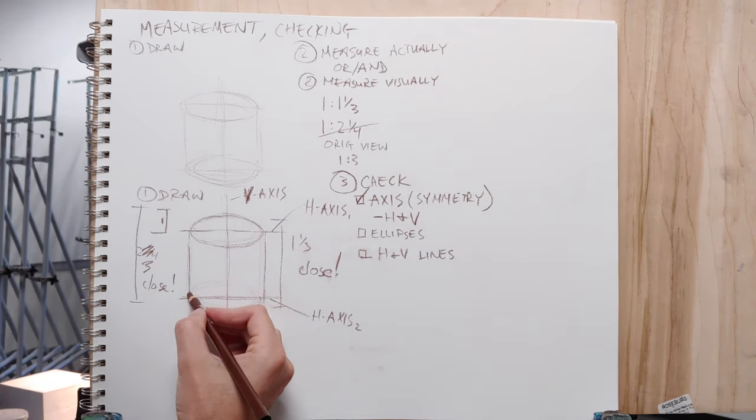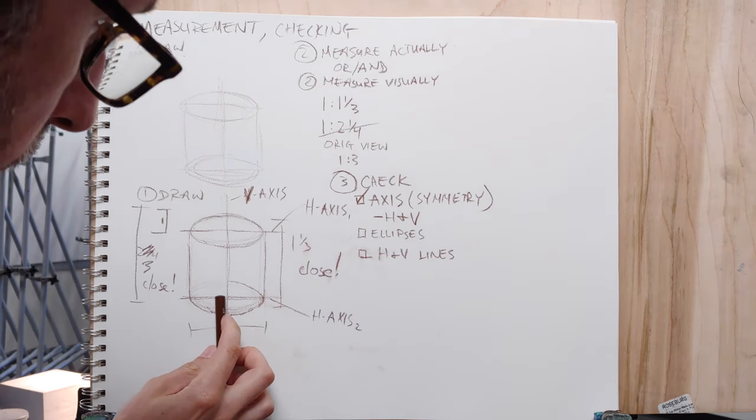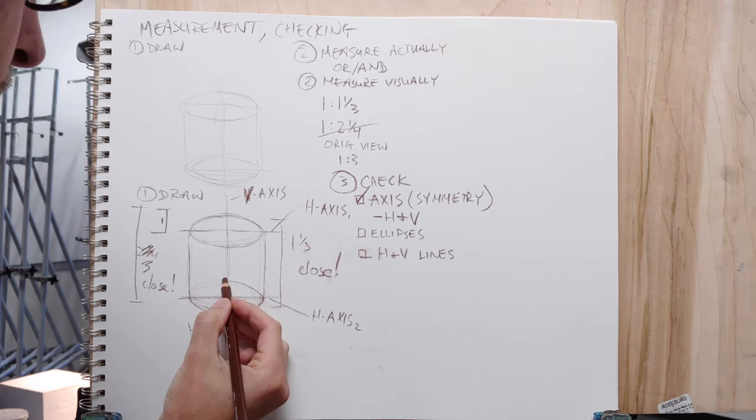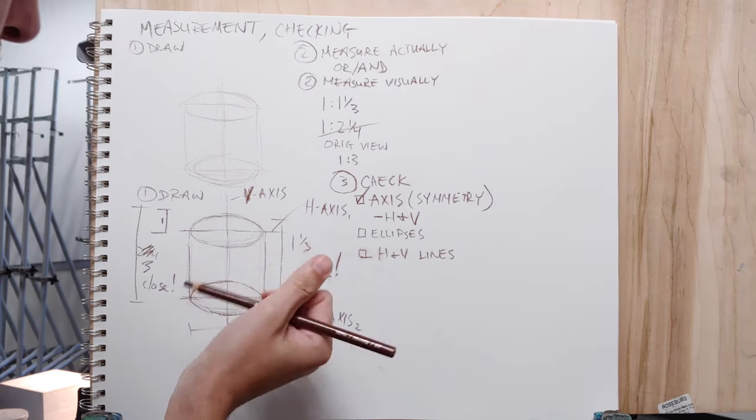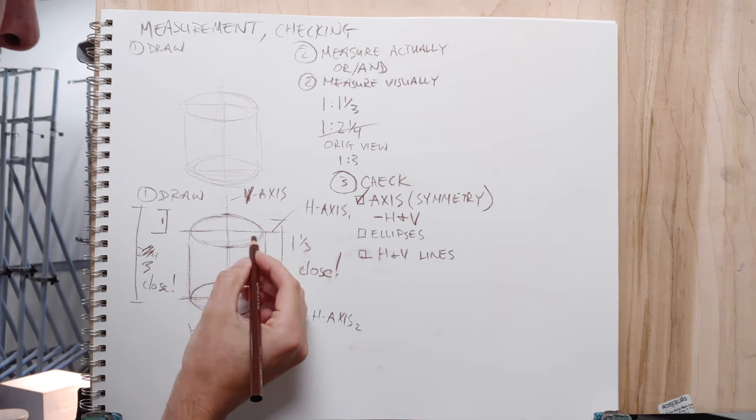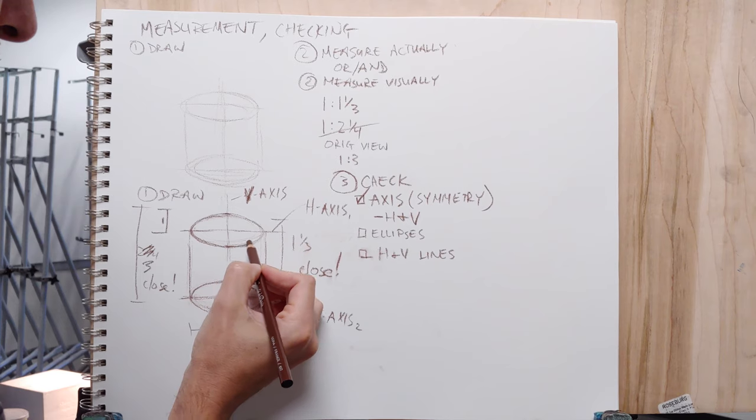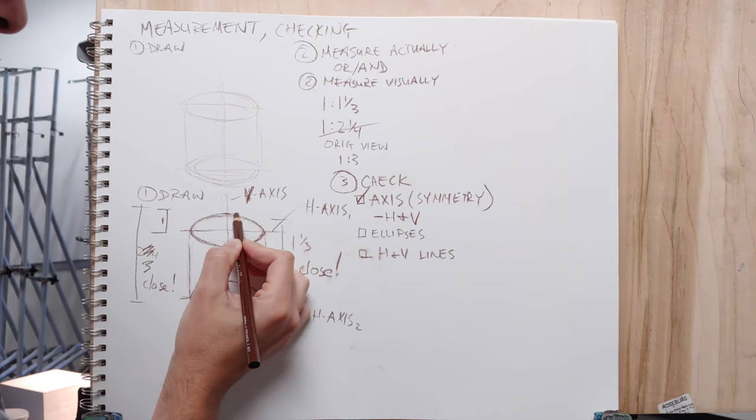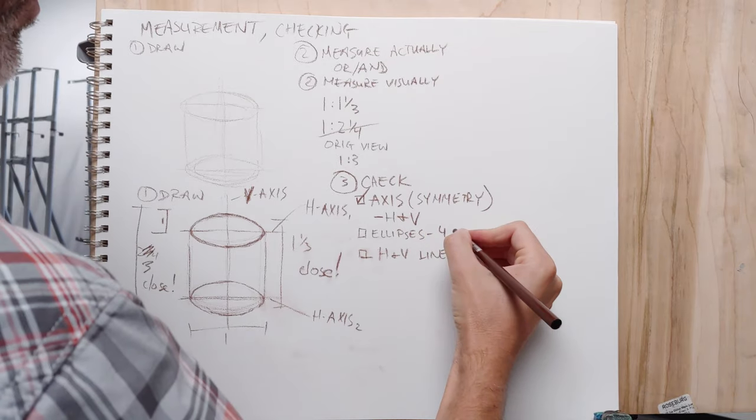You can also check your ellipses. An ellipse is symmetrical in all four quadrants, and you should be able to take any one quadrant and flip it around, and it should match all the other four quadrants. You also want to check that your top and bottom ellipse agrees with each other. Typically, in drawing objects, you can just use the exact same ellipse or something very similar, if it's like a cone or something like that.